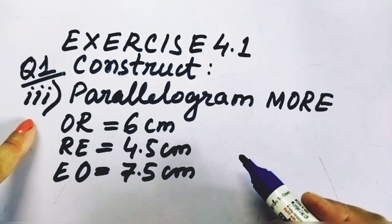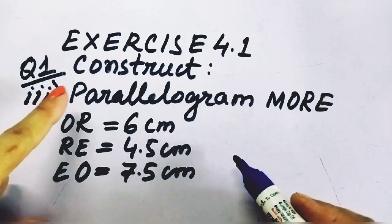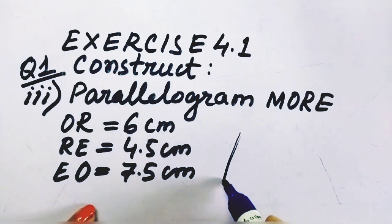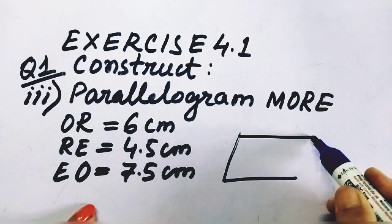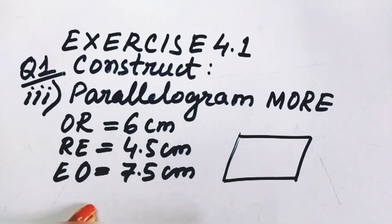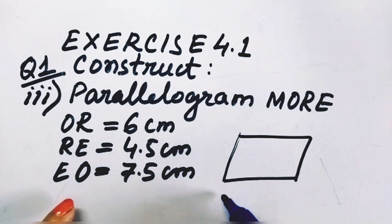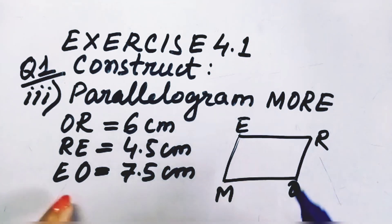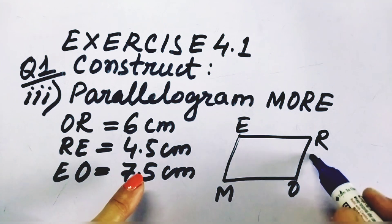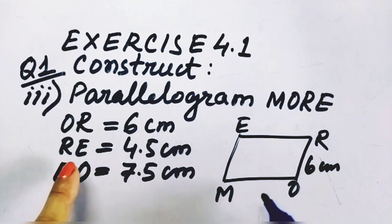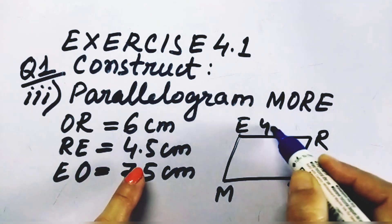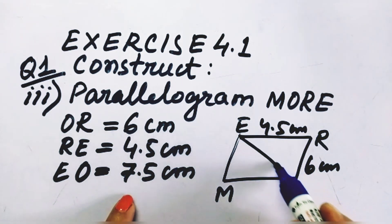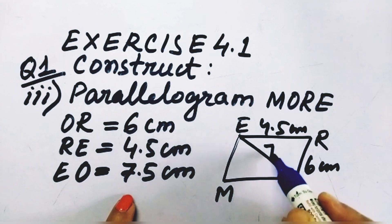In question number 3, the third part, we have parallelogram MORE. Let us draw a rough sketch. Here OR = 6 cm, RE = 4.5 cm, and EO — that means one of the diagonals — is given as 7.5 cm.